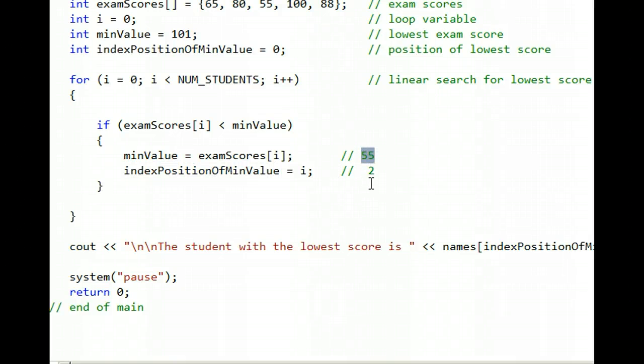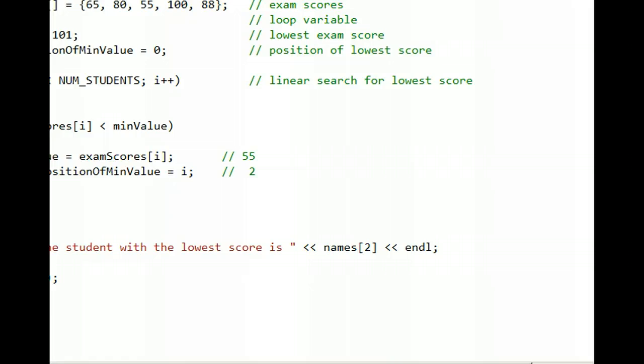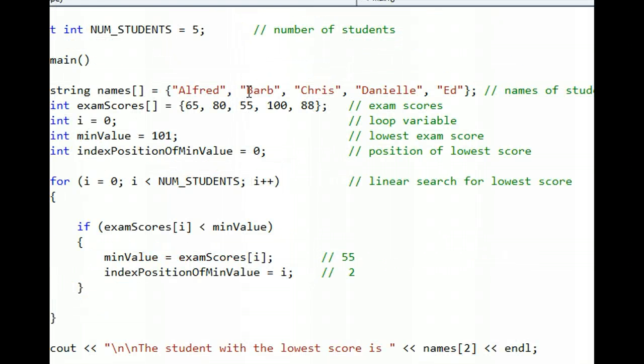So we cout that the student with the lowest score is, and check this code very carefully now, the names, square brackets, and because this is simply a fancy way for saying the number 2, you can think of it this time as executing names[2]. And names[2] refers to—Barb. No, I'm sorry, it refers to Chris. Alfred is in position 0, Barb is in position 1, and Chris is in position 2.